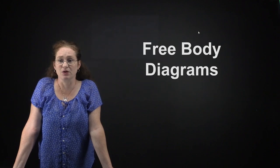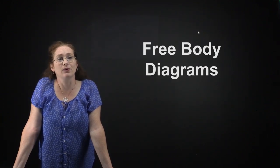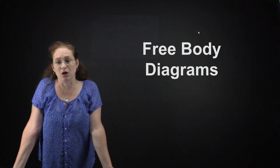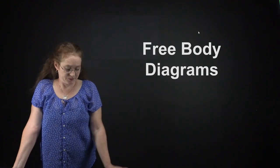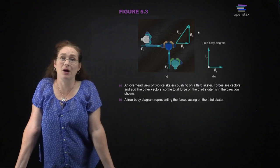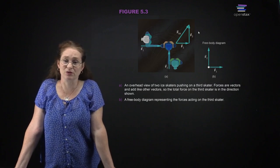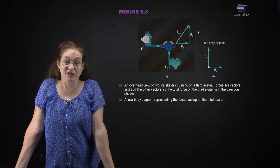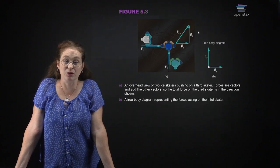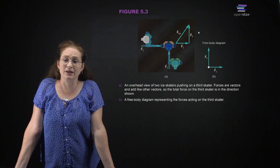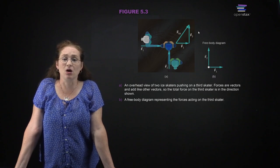Free body diagrams are a way of illustrating what the total forces on some object are. Most of these problems are some type of word problem. You're going to start by sketching the picture very briefly, and then you're going to draw all of the forces acting on the object.